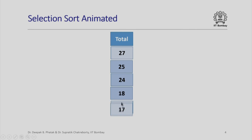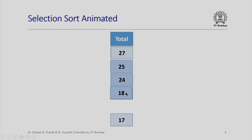I could have chosen any one of the 24s — I chose one particular 24 and then the swap happens. Next, the maximum number in the remaining sub-problem is chosen, it is taken to its rightful place, and the swap happens. Finally, this is already in its rightful place and 17 is already in its rightful place, and we have gotten a sorted array by selection sort.